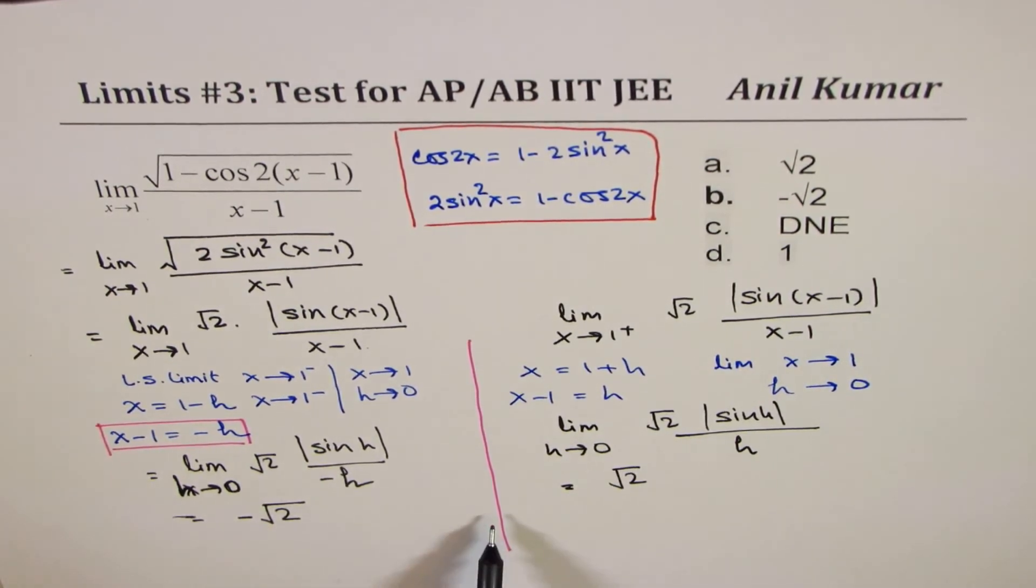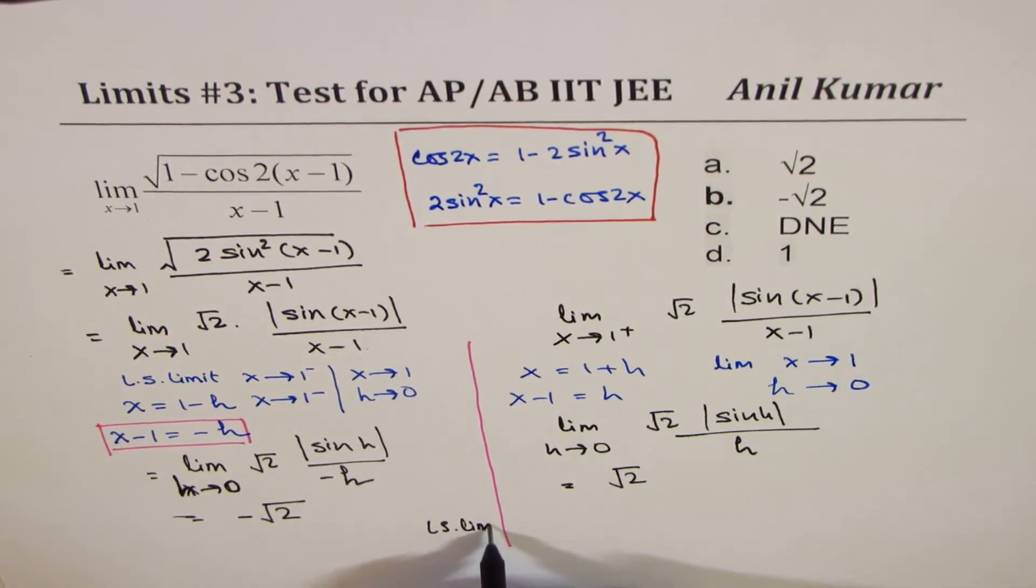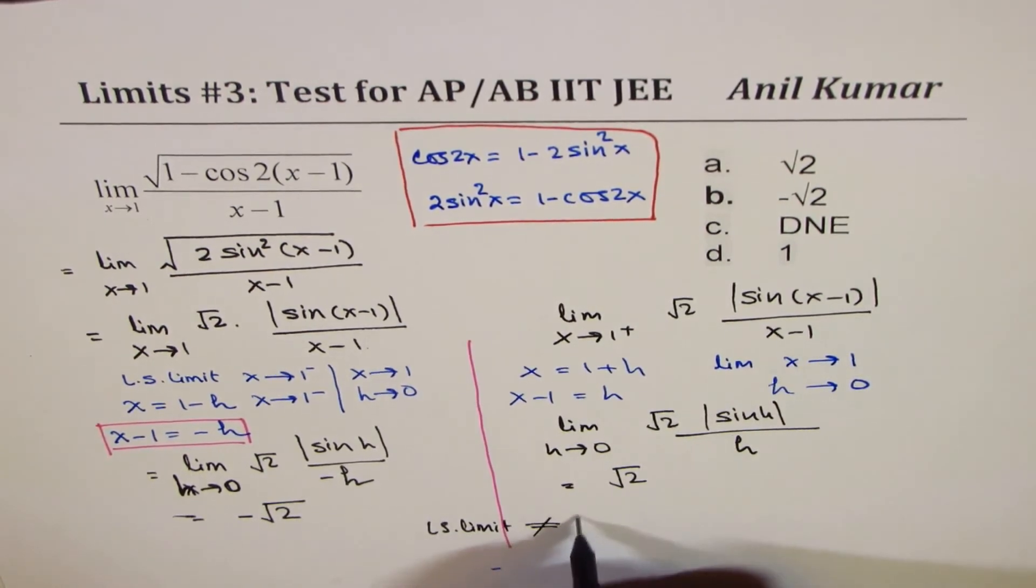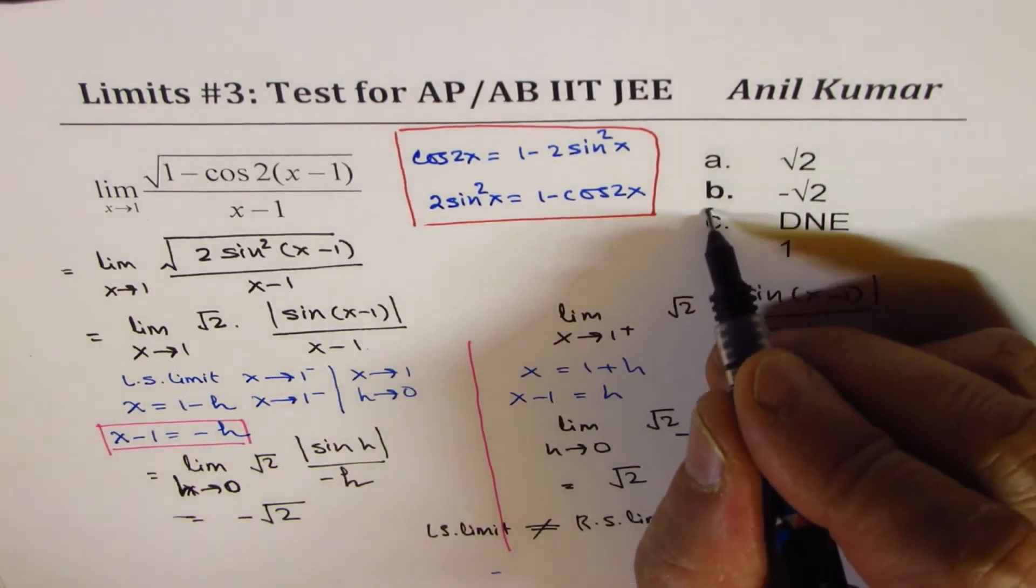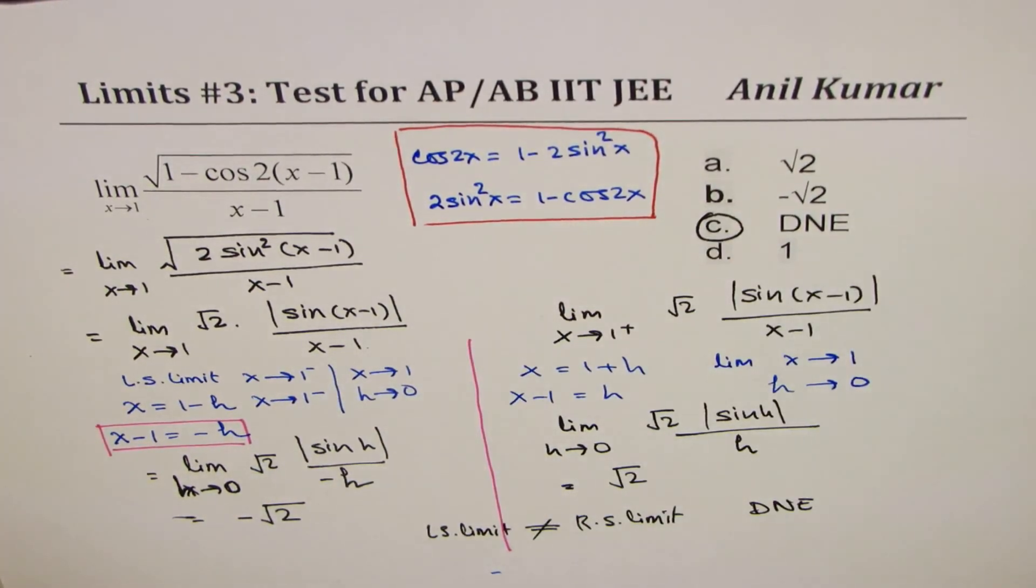As you can clearly see, the left side limit is not equal to right side limit. Therefore, the limit does not exist. So option C is the correct option.